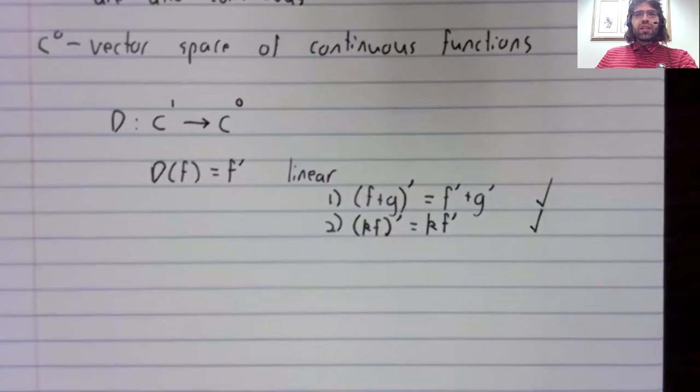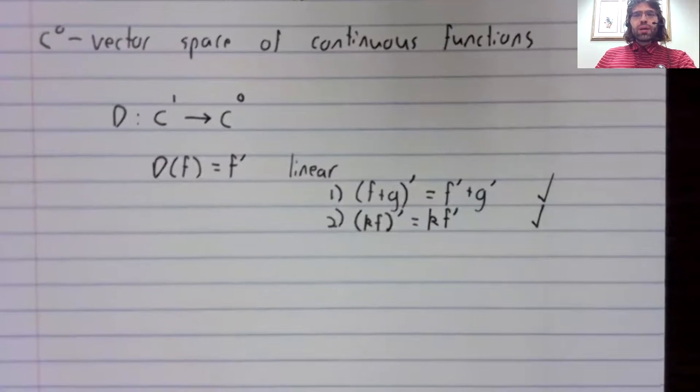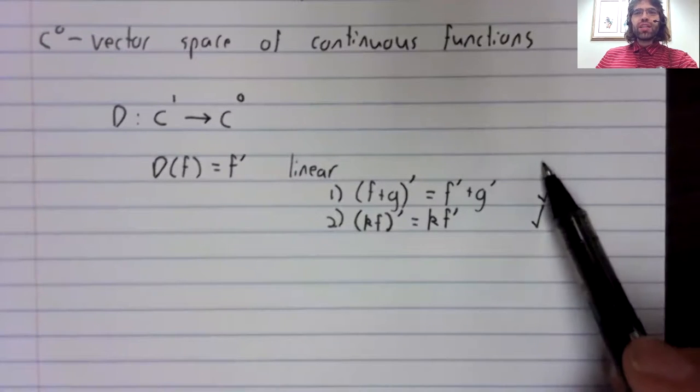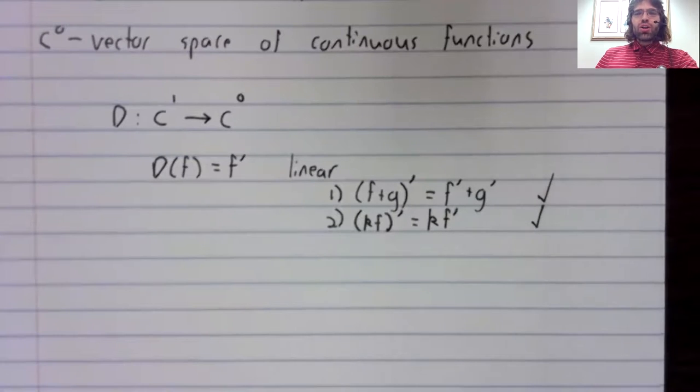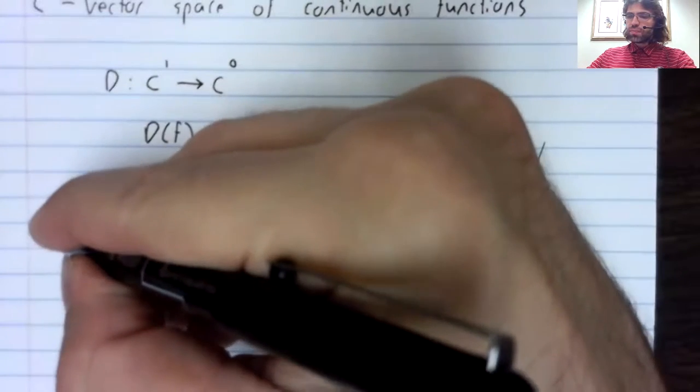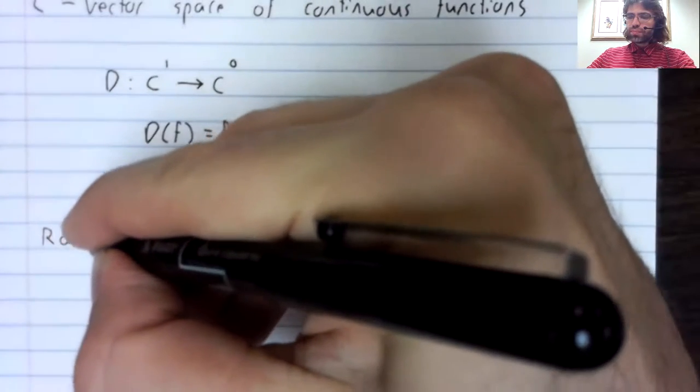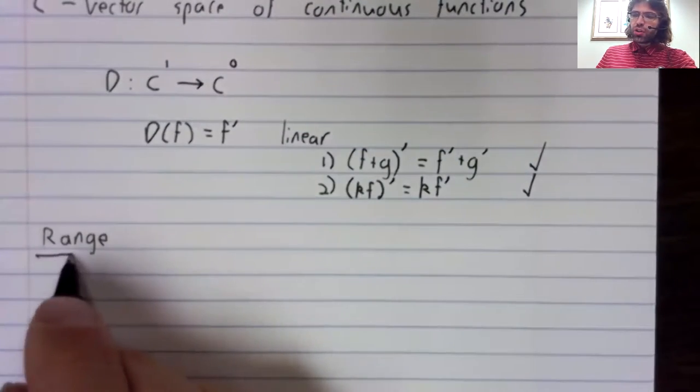Having demonstrated that this is linear, let's talk about the two other definitions we gave in this set of notes: the range and the kernel.